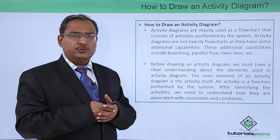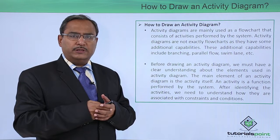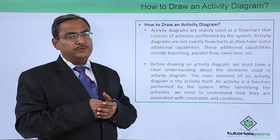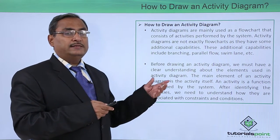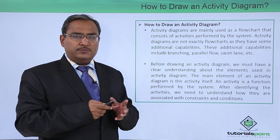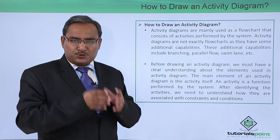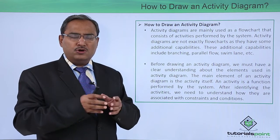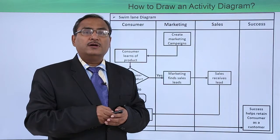In our previous videos, we discussed that in UML there are five different diagrams which deal with the dynamic view of the system: use case diagram, sequence diagram, collaboration diagram, structure diagram, and this fifth one — the activity diagram. In all those diagrams we pass messages, but here in this diagram we pass the control flow — how the control flows through the activity diagram is the main point of concern.